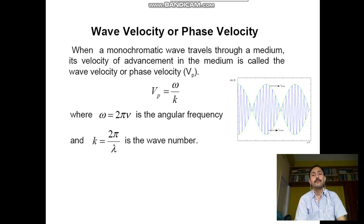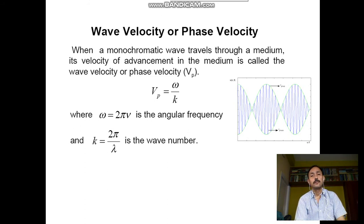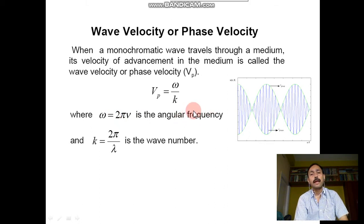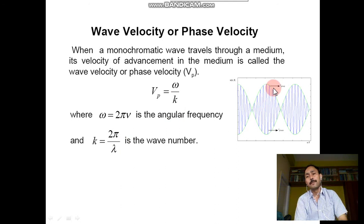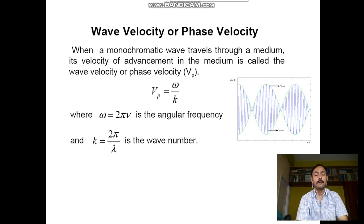Wave velocity or phase velocity: when a monochromatic wave travels through a medium, its velocity of advancement in the medium is called wave velocity or phase velocity. We represent it as vp = ω/k, where ω = 2πν is the angular frequency and k = 2π/λ is the wave number or propagation constant. In the picture, the envelope represents the wave velocity and the inner one represents the group velocity.